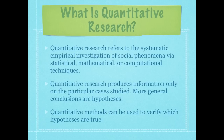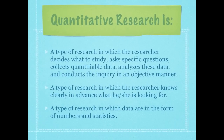Quantitative research produces information only on the particular cases studied, more general conclusions or hypotheses, and quantitative methods can always be used to verify which hypotheses are true. Quantitative research is a type of research in which the researcher decides what to study, asks specific questions, collects quantifiable data, analyzes these data, and conducts the inquiry in an objective manner. Notice that phrase — objective manner — because one of the attributes of quantitative research is that the researcher is distantly objective from the problem.